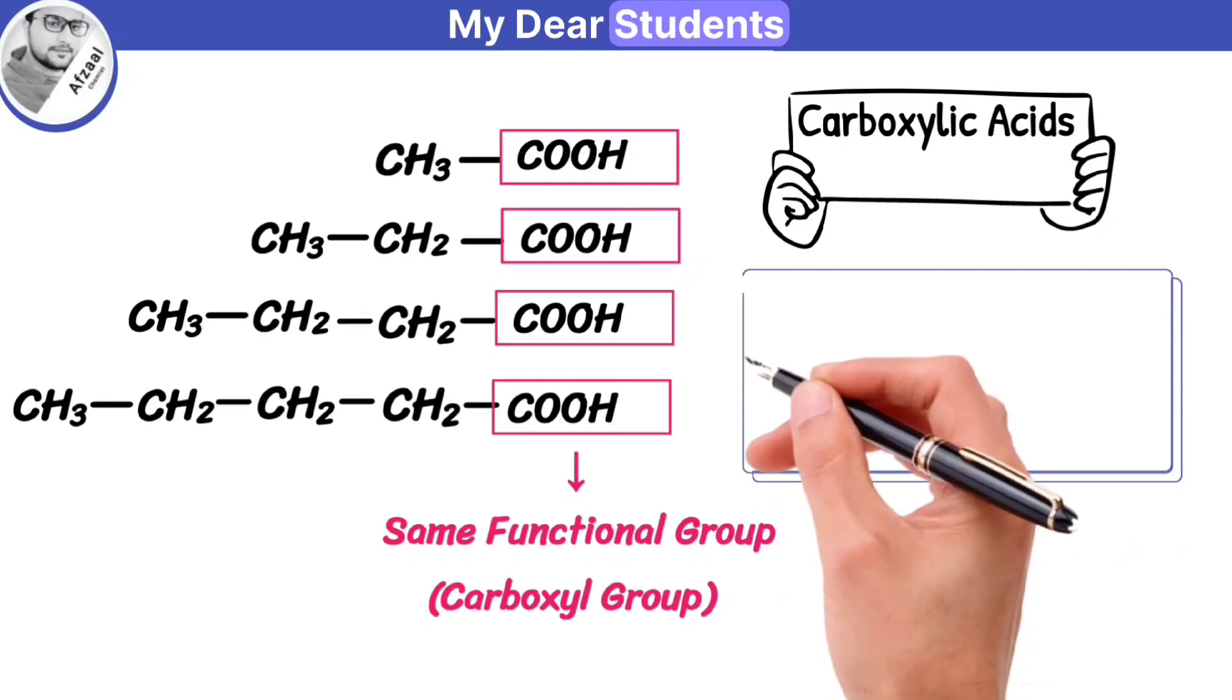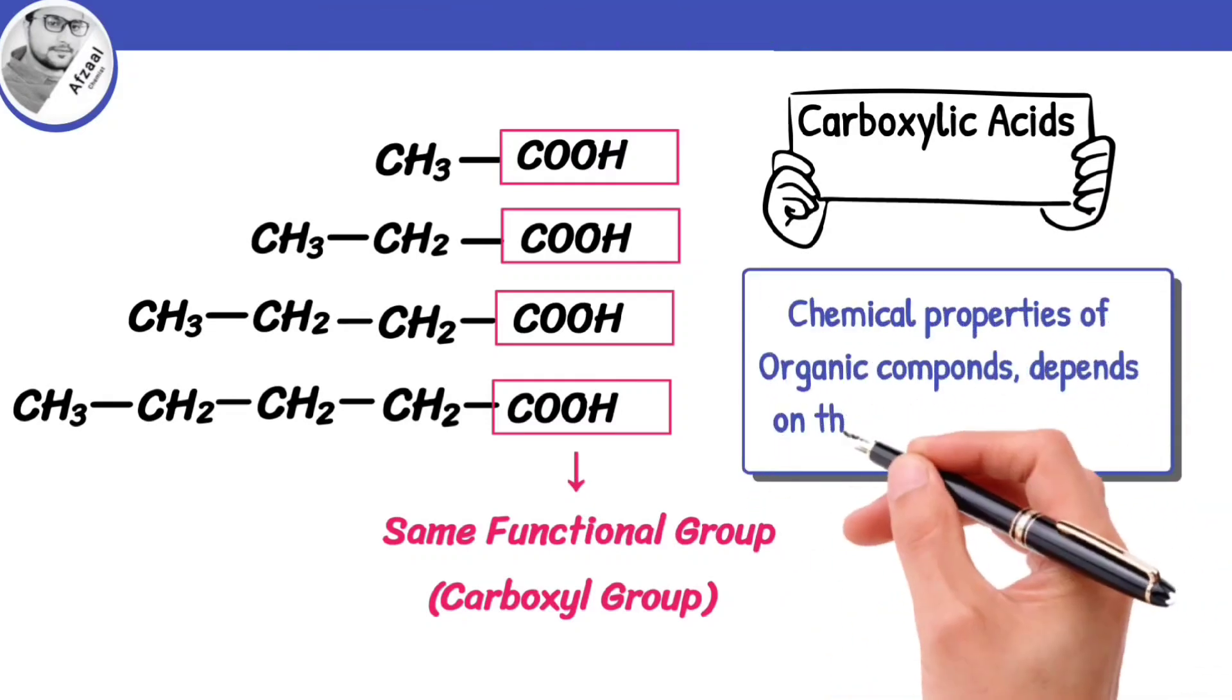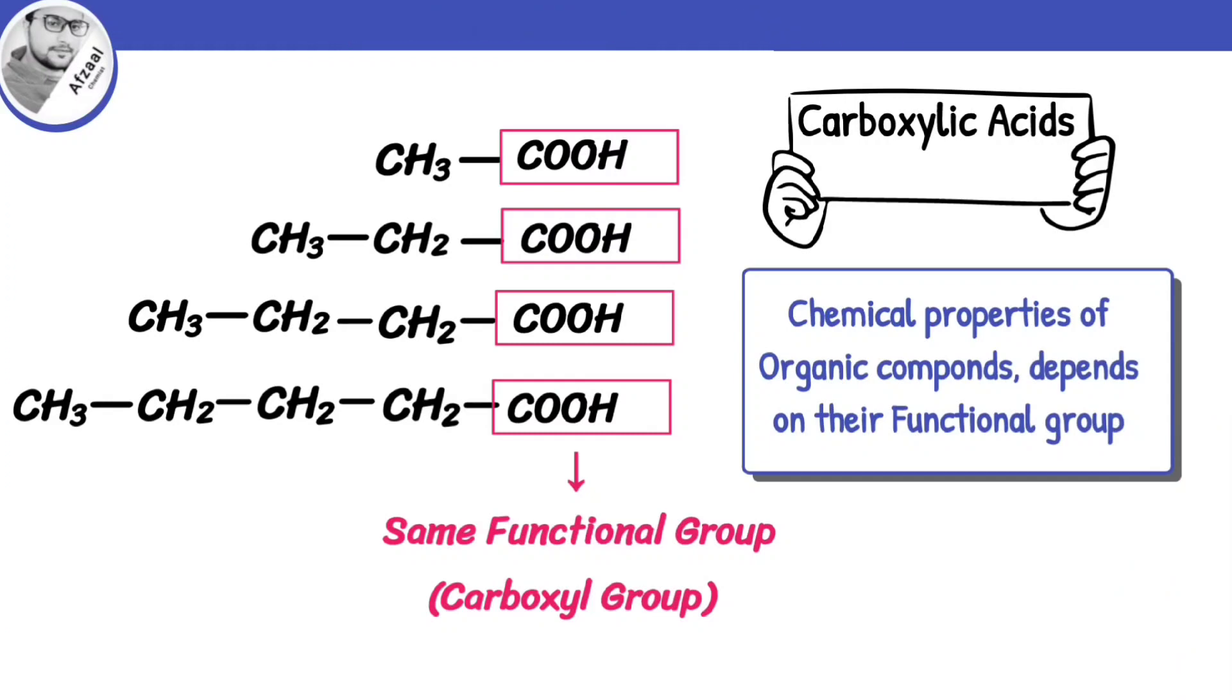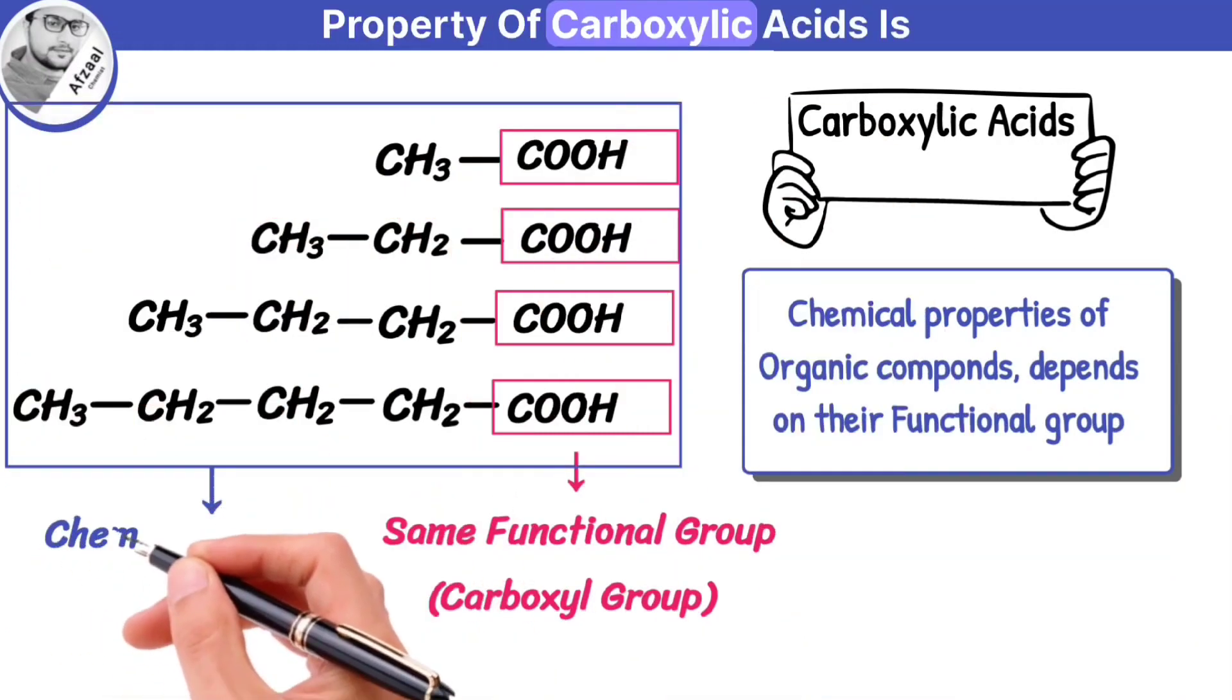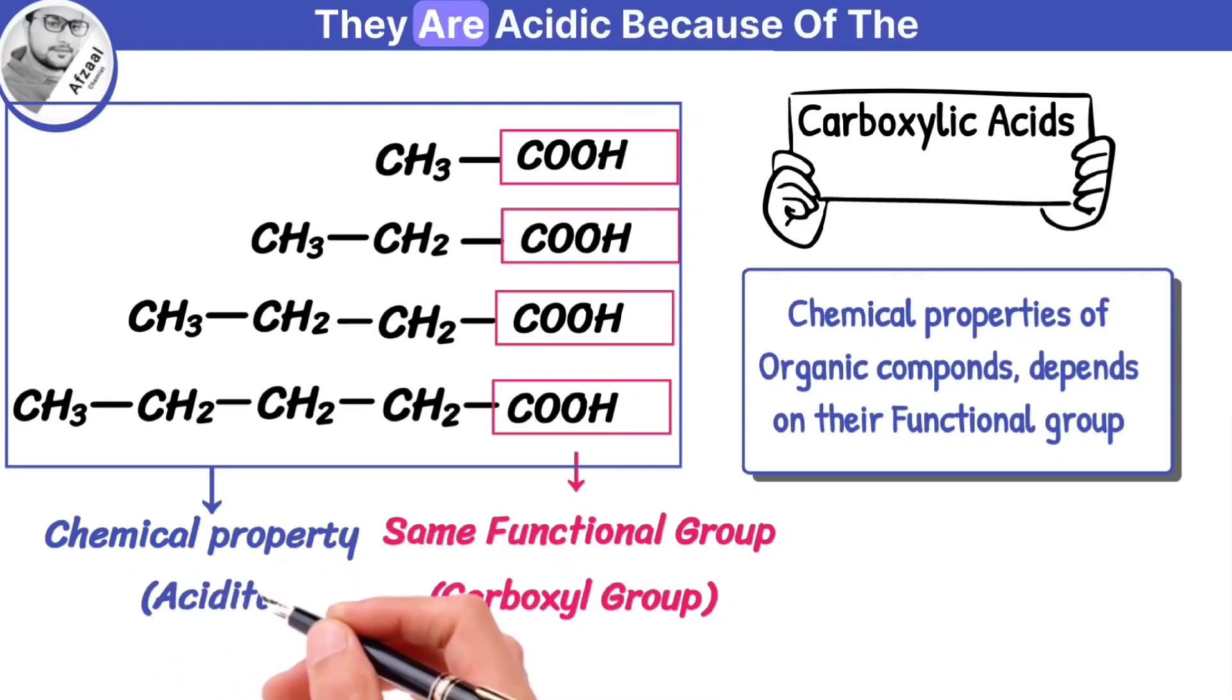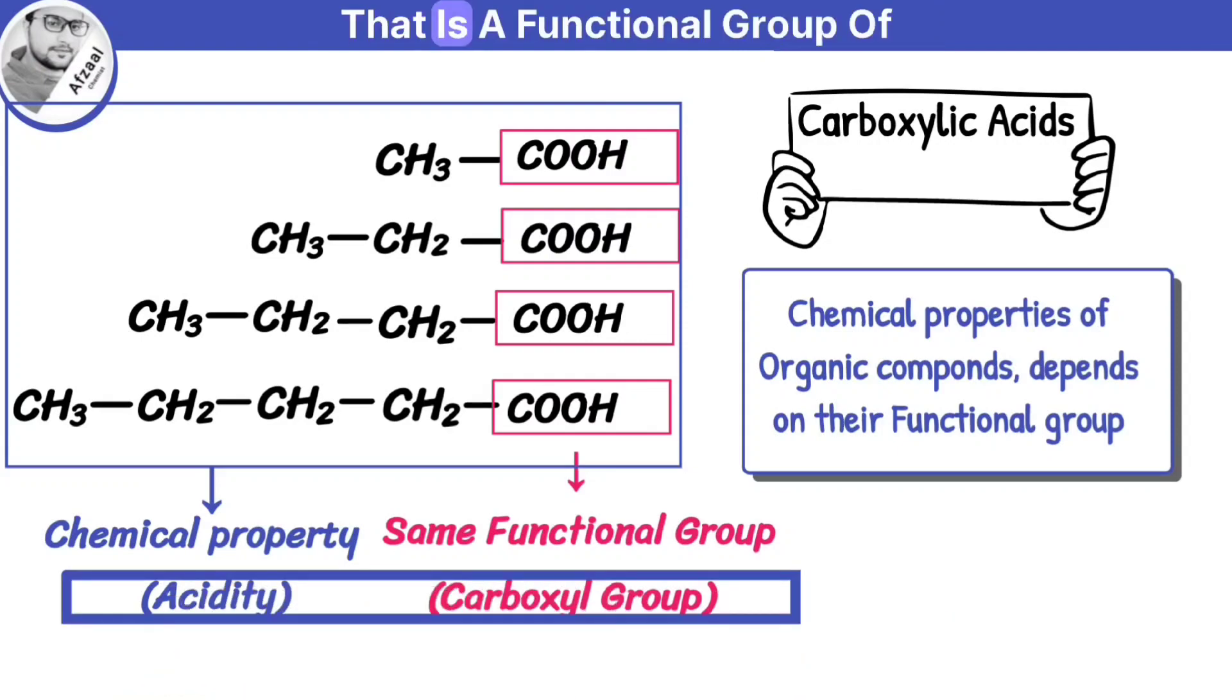My dear students, remember that the chemical properties of organic compounds depend on their functional group. For example, the most important chemical property of carboxylic acids is their acidity. They are acidic because of the presence of the carboxyl group, that is a functional group of this homologous series.